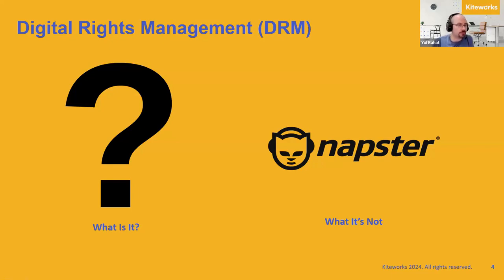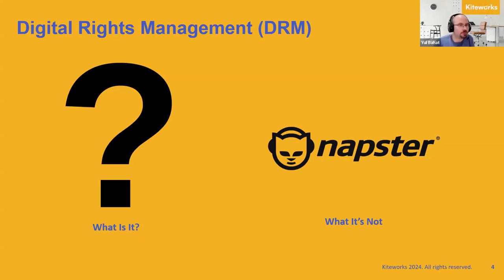We're mostly here to talk about what we call enterprise DRM — how companies and people who work with sensitive information, maybe it's privacy, maybe it's business-oriented, all sorts of information that should be protected and handled carefully. And yet, for the purposes of conducting business, we need to share that with third parties. How do we do that without losing control? How do we make sure that only the people that need to see it see it, and that it doesn't get away from us?